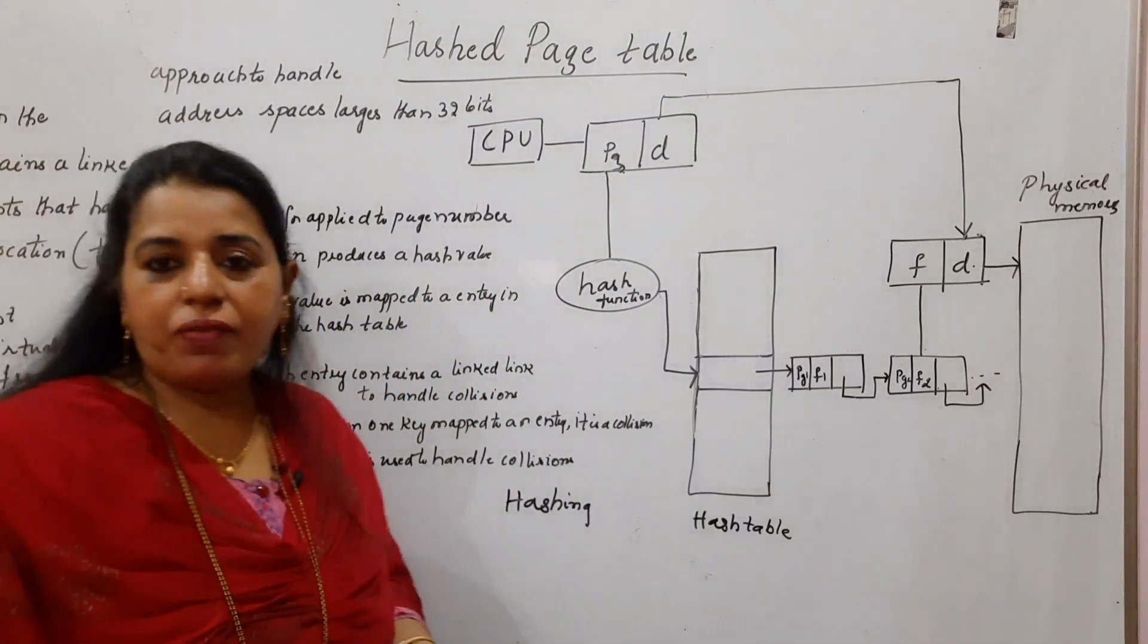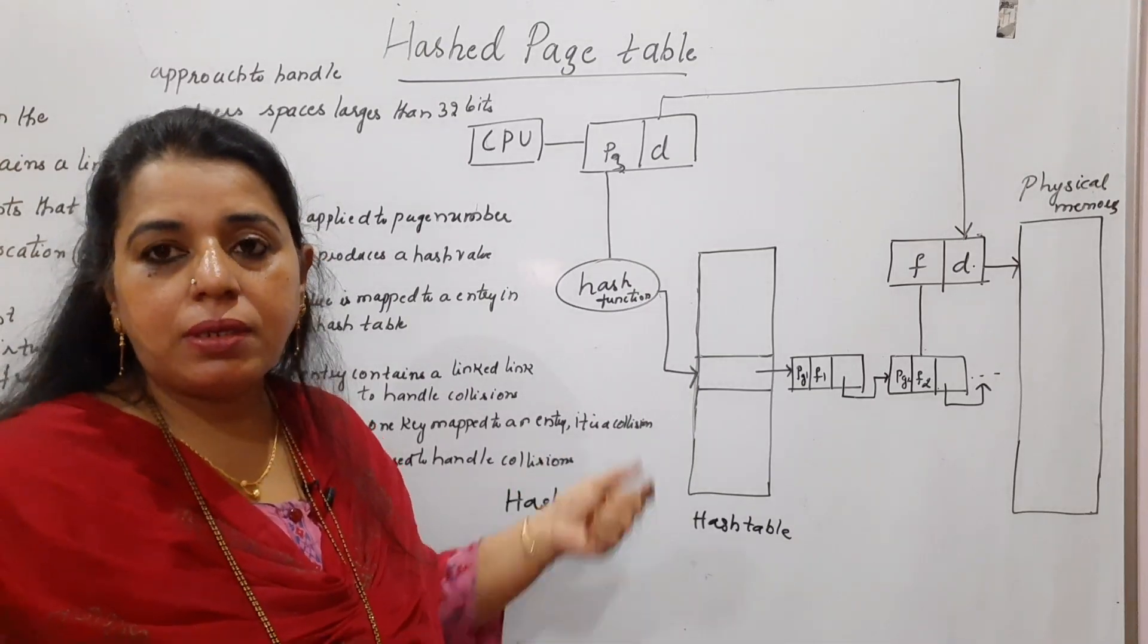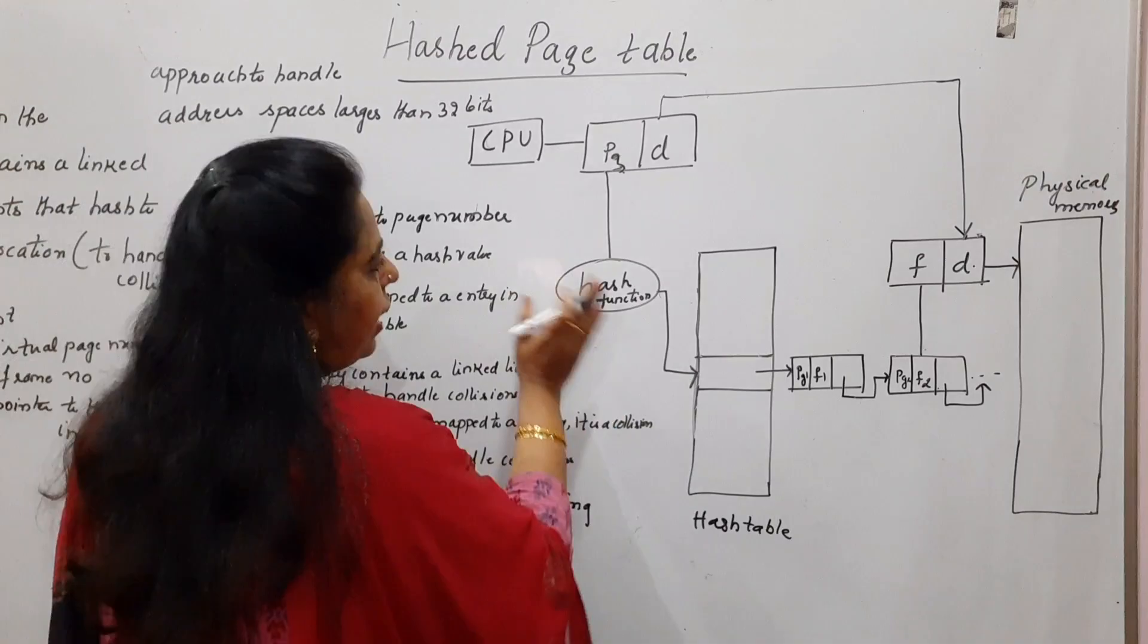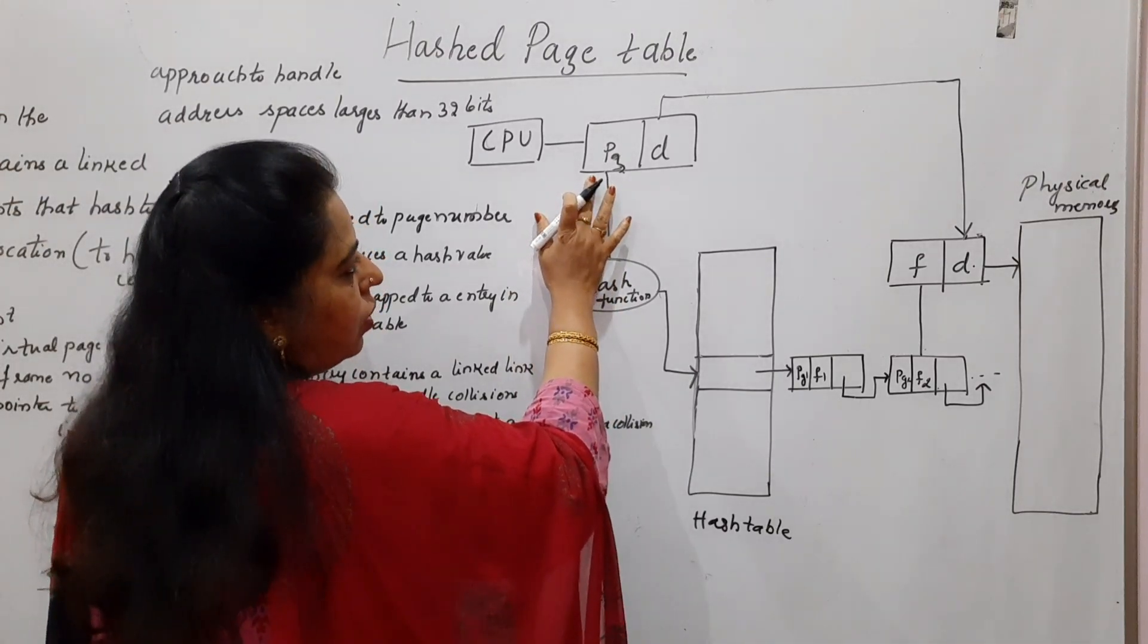Hash functions are of different types: multiplication, division. There are other hash functions. The one which we are going to use here is the division hash function. The hash function is applied on the page number of the logical address.